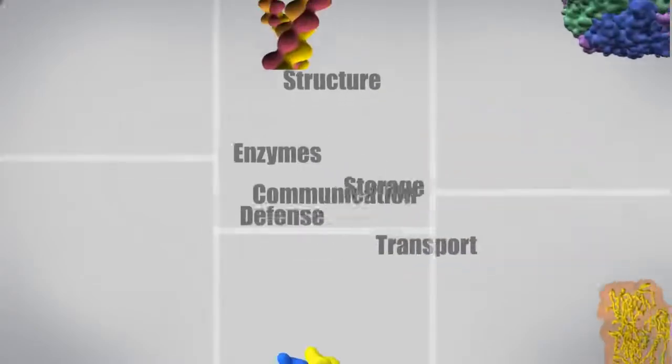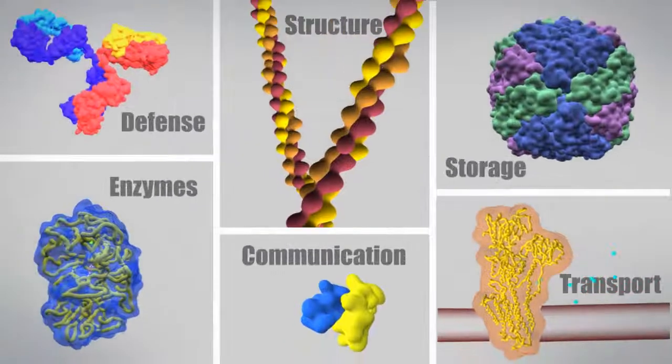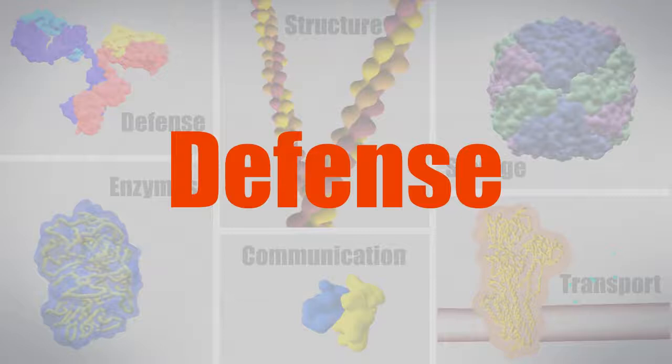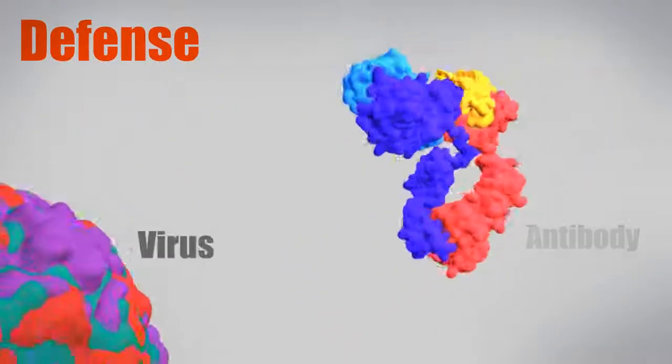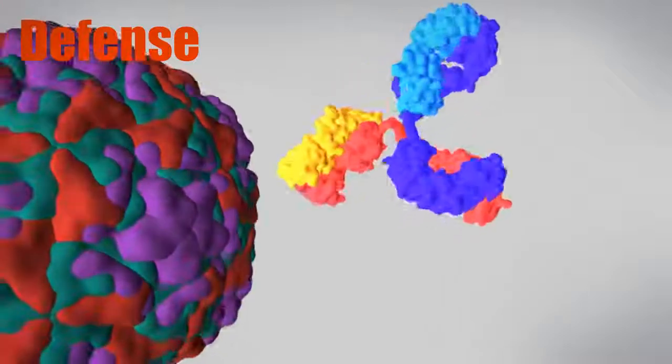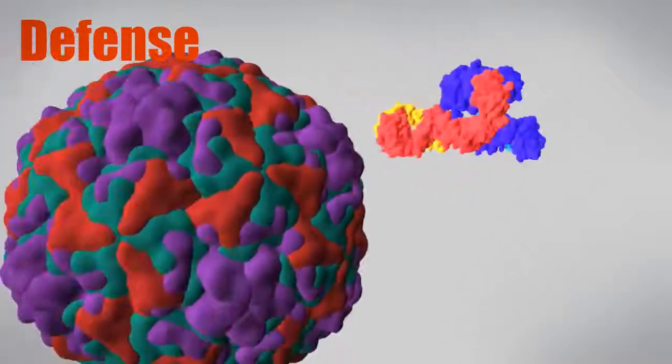Many proteins rely on the ability to recognize the shape of specific molecules in order to function correctly. The flexible arms of antibodies protect the body from disease by recognizing and binding to foreign molecules, and thus preventing the viral RNA or DNA to enter the cell.